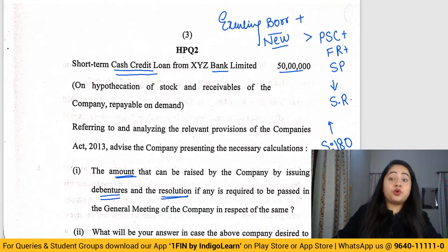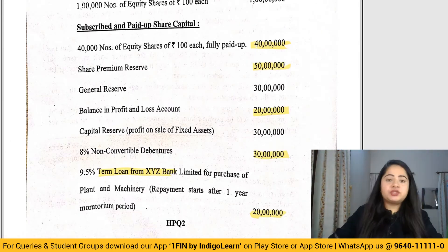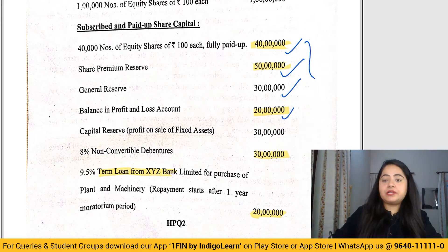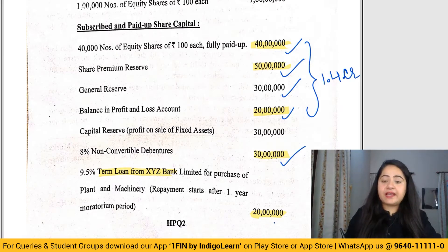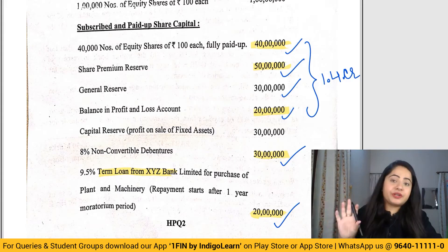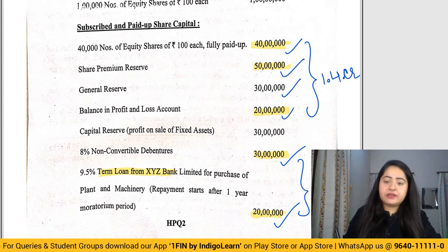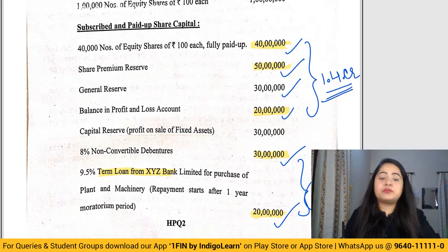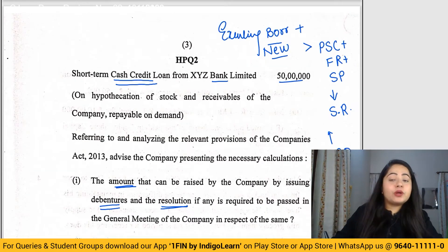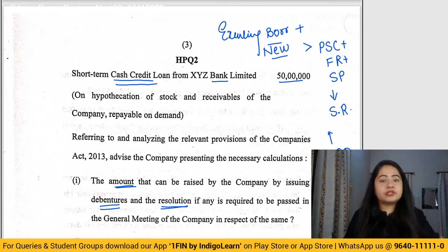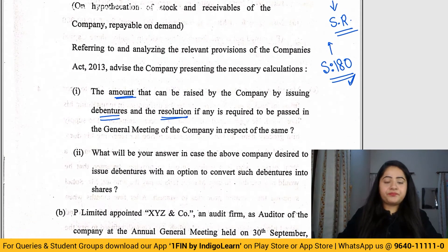If existing borrowings plus new borrowings exceed the paid-up share capital plus free reserves plus security premium, then the company will need a special resolution; otherwise a board resolution is sufficient. We exclude temporary loans. The total of paid-up share capital, free reserves, general reserves, and security premium comes to 1.4 crores. Existing loans (30 lakh + 20 lakh, excluding cash credit) are 50 lakh. So up to 1.4 crores, a board resolution is sufficient; beyond that, a special resolution is required.